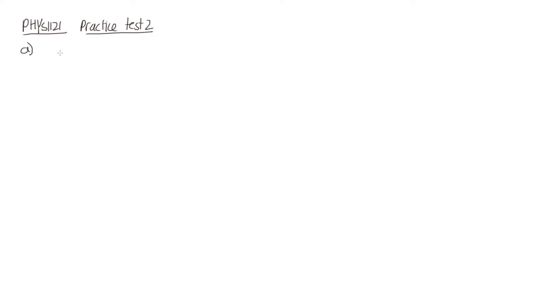This is the solutions to PHYS 1121 practice test 2. In problem A, we've got a bullet which is being shot directly upwards, and then it passes through the centre of mass of a 5 kilogram block which is initially at rest. We have our bullet coming upwards and it's being shot into this block. This is 5 kilograms, and the bullet has a mass of 10 grams.